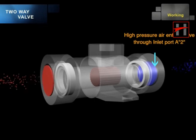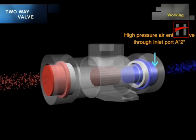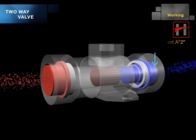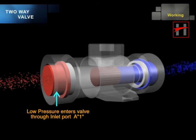The high-pressure air enters into the valve through the inlet port A2 and the low-pressure air enters into the valve through inlet port A1.